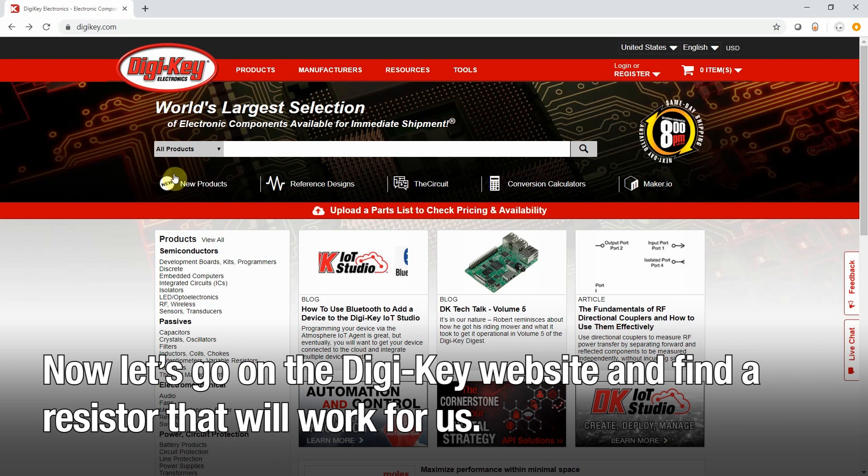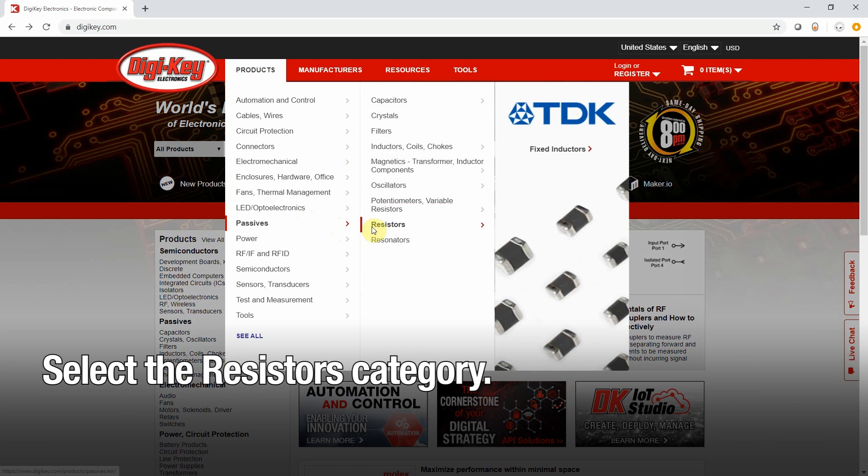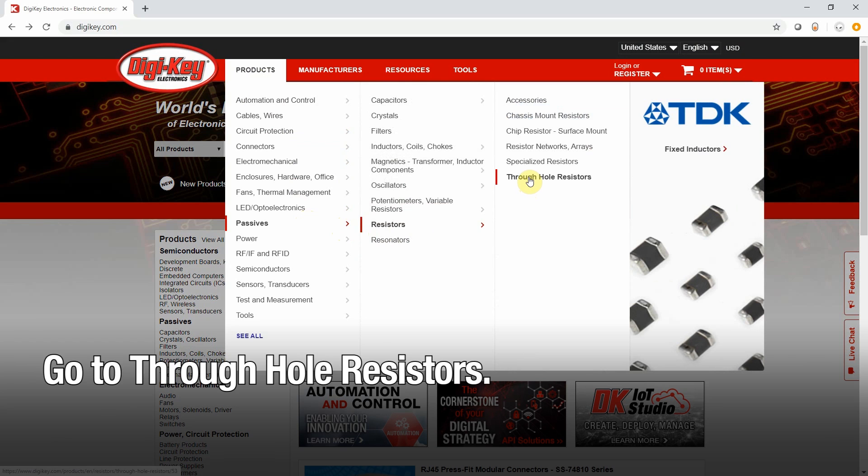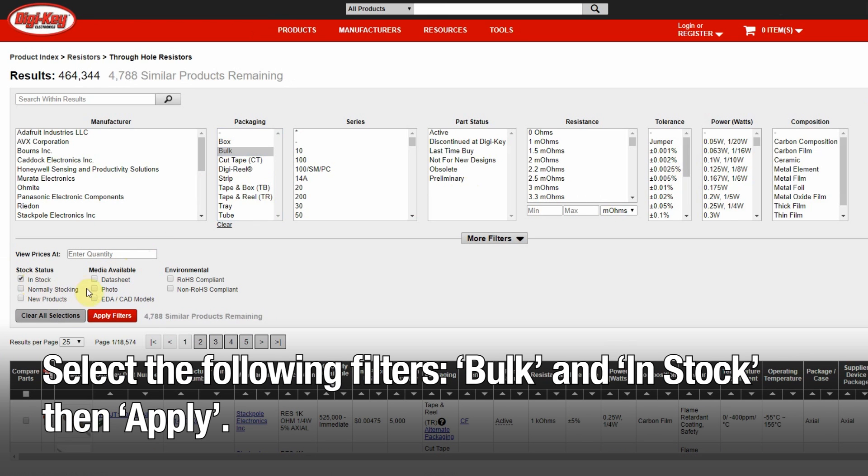Now let's go on to the Digikey website and find a resistor that'll work for us. Let's select the resistors category, and then we'll go to through hole resistors, select bulk packaging, and in stock. Then I apply the filters.